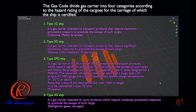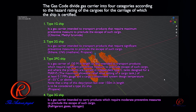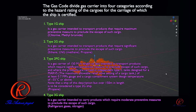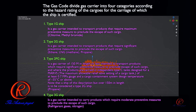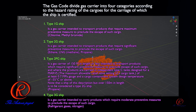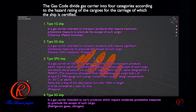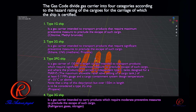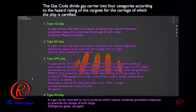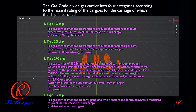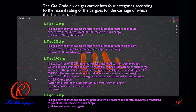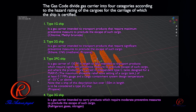The gas code divides gas carriers into 4 categories, according to the hazard rating of the cargoes for which the ship is certified. Type 1G ships are gas carriers intended to transport products that require maximum preventive measures to preclude the escape of such cargo — for example, fluorine and methyl bromide.